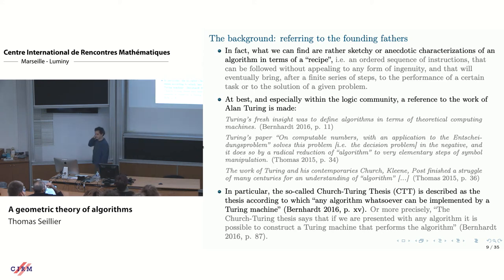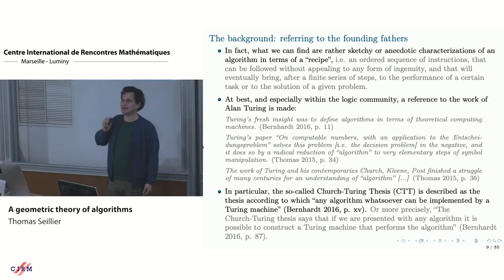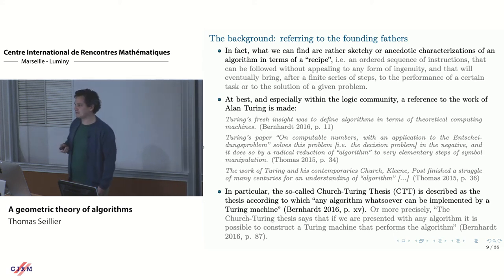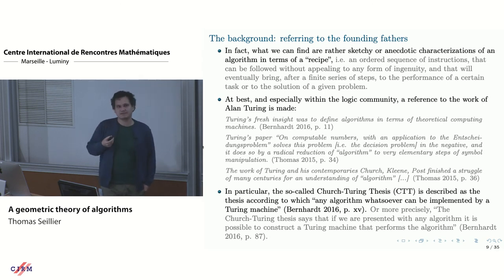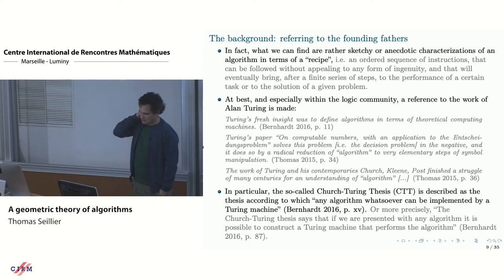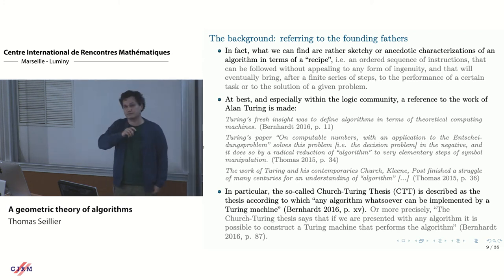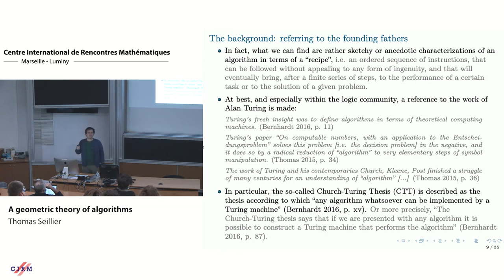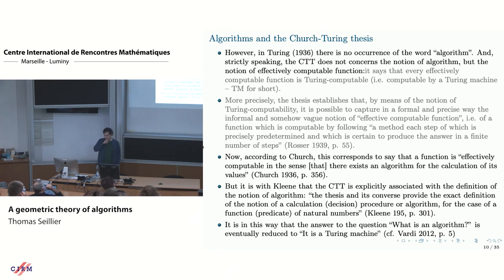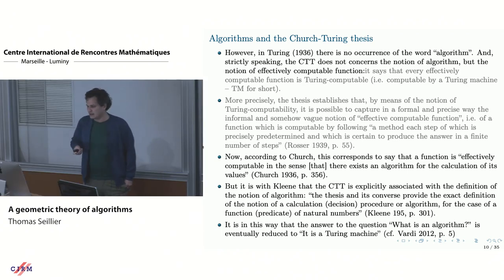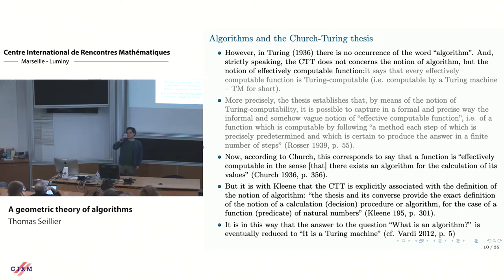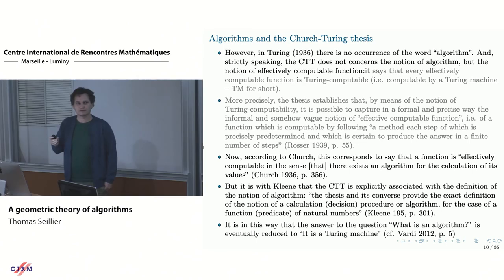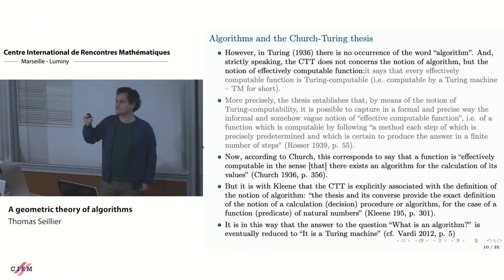When you read papers about algorithms, it's usually described in a sketchy way as some kind of recipe — like a cooking recipe — a sequence of steps. There's nothing formal about this. The best thing you can usually find is a reference to Turing and the Church-Turing thesis. But if you look at Turing's paper, it's not about algorithms — the word algorithm doesn't even appear in it. It talks about what effectively computable functions are.